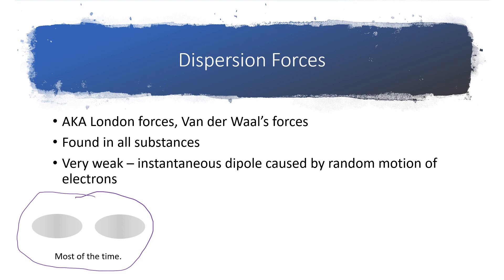But every once in a while, just due to the random motion of the electrons, you might have an electron distribution that looks something like this. So just for an instant, more electrons are located over here on the left side of the molecule, making it slightly negative just because there are too many electrons clustered over there.